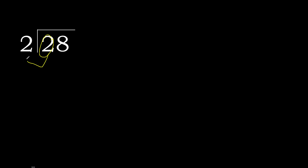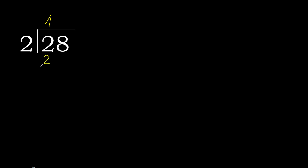28 divided by 2. 2 is not less, therefore work with 2. Here, 2 multiplied by which number is nearest to 2 but not greater? 2 multiplied by 2 is 4 — 4 is greater. 2 multiplied by 1 is 2, which is not greater. 2 minus 2 equals 0.